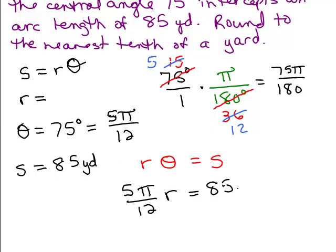Now, I'm going to leave off the yards for now, but I know in the end the radius has to be given in yards as well. So how do I solve for R? Well, we can multiply by the reciprocal, which is 12 over 5 pi. And on this side, 12 over 5 pi.